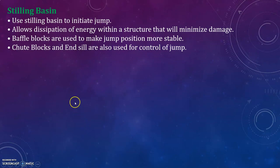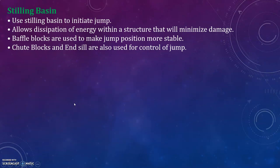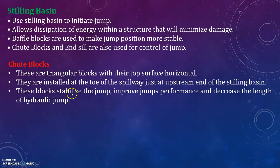A stilling basin is used to initiate the jump, allowing dissipation of energy within a structure that will minimize damage. Buffer blocks are used to make the jump position more stable. Chute blocks and end sill are also used for control of the jump.